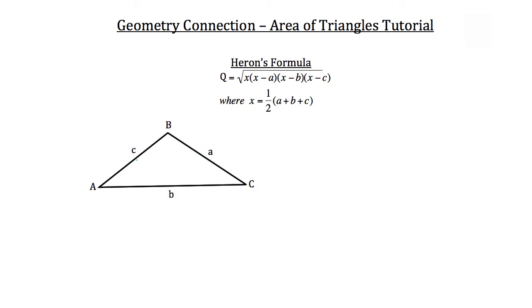So side lengths a, B, and C. Now let's take a look at a practice problem. I'm going to tell you that side length a has a value of five units and side length B has a value of seven units.